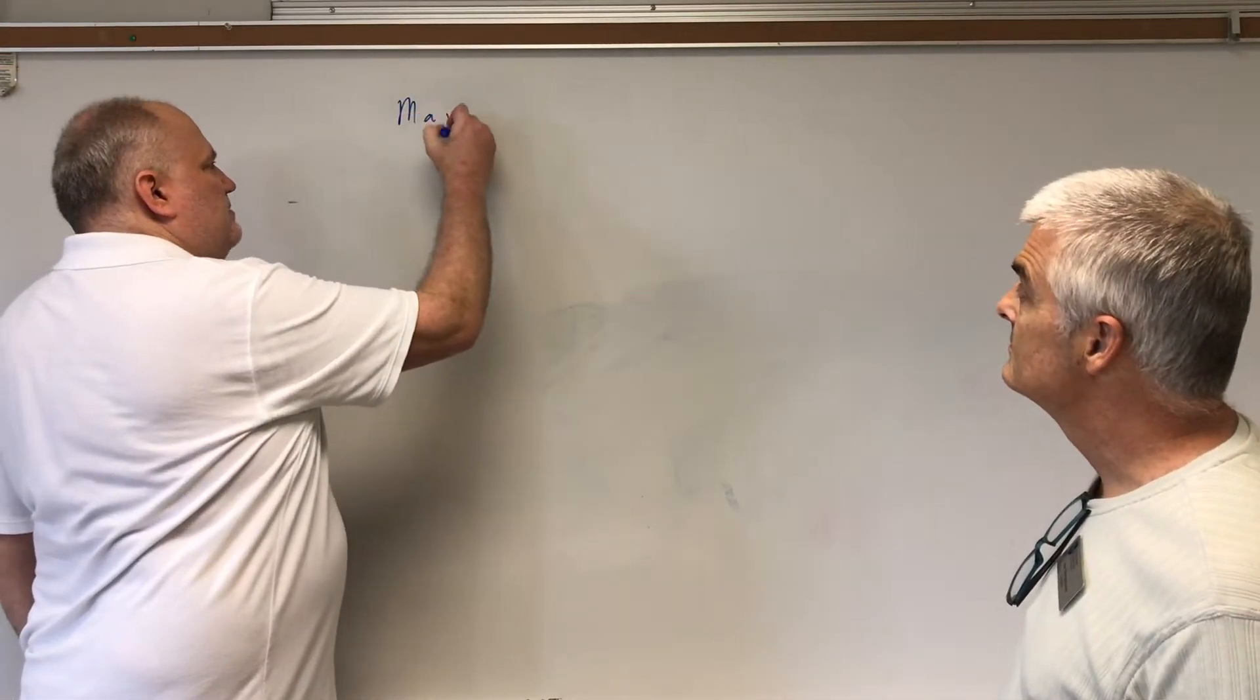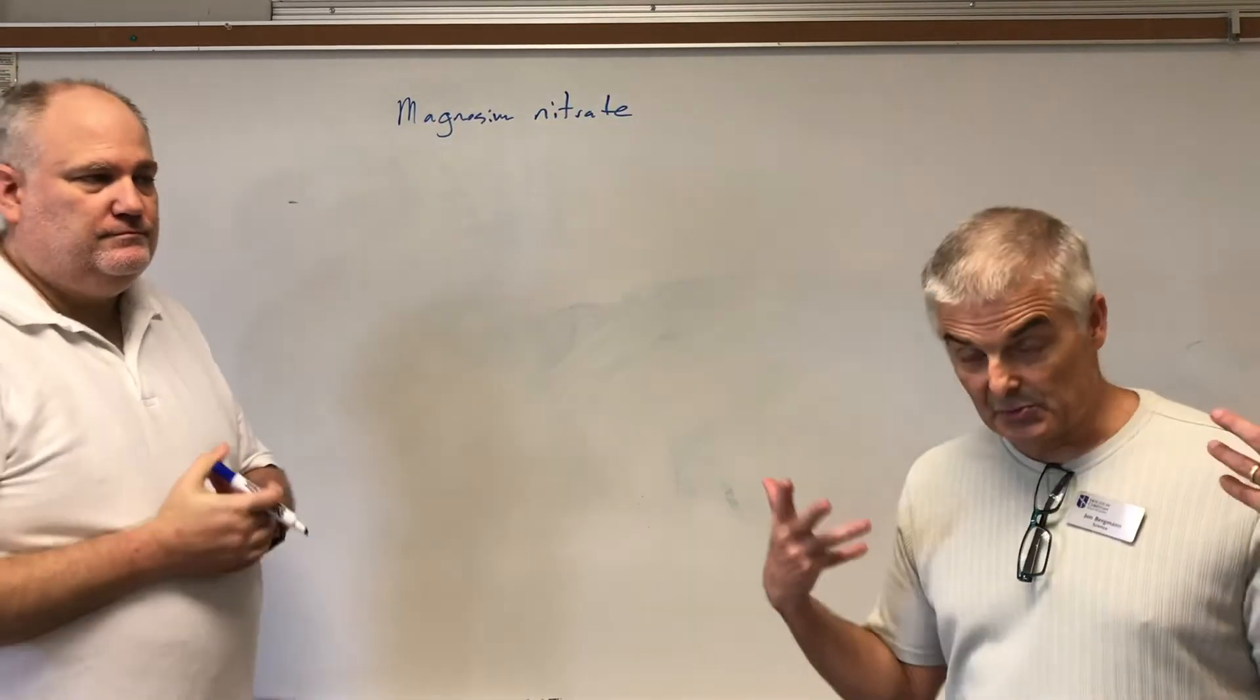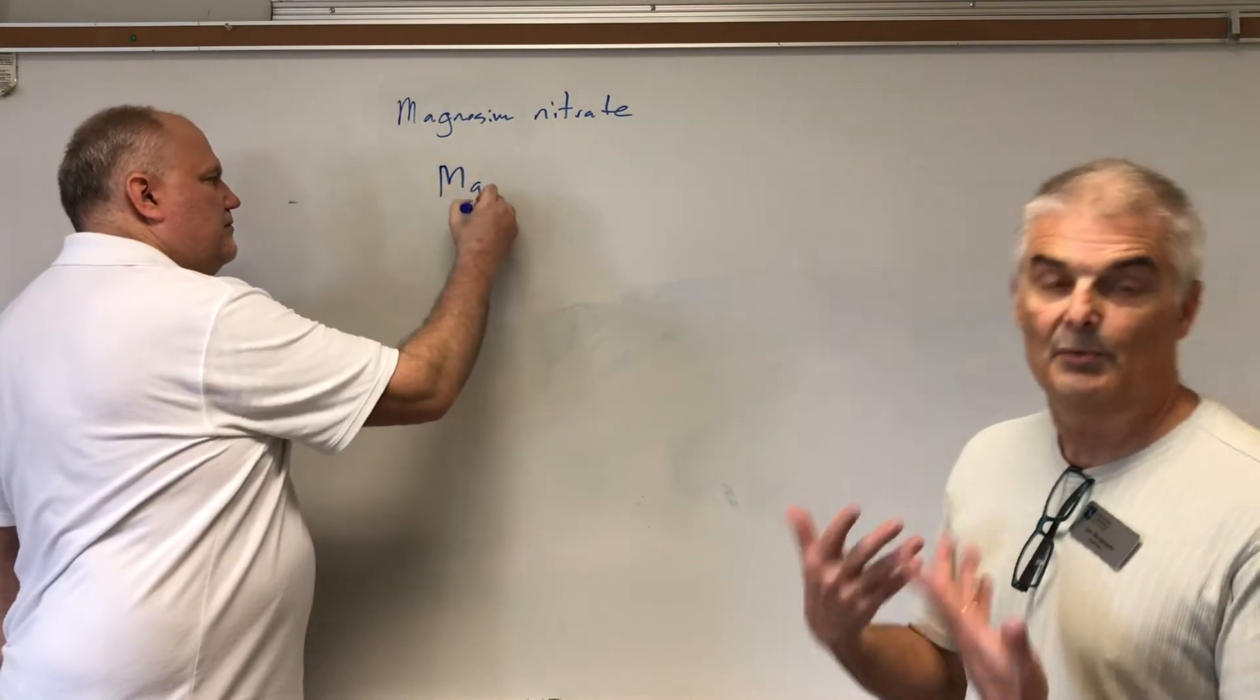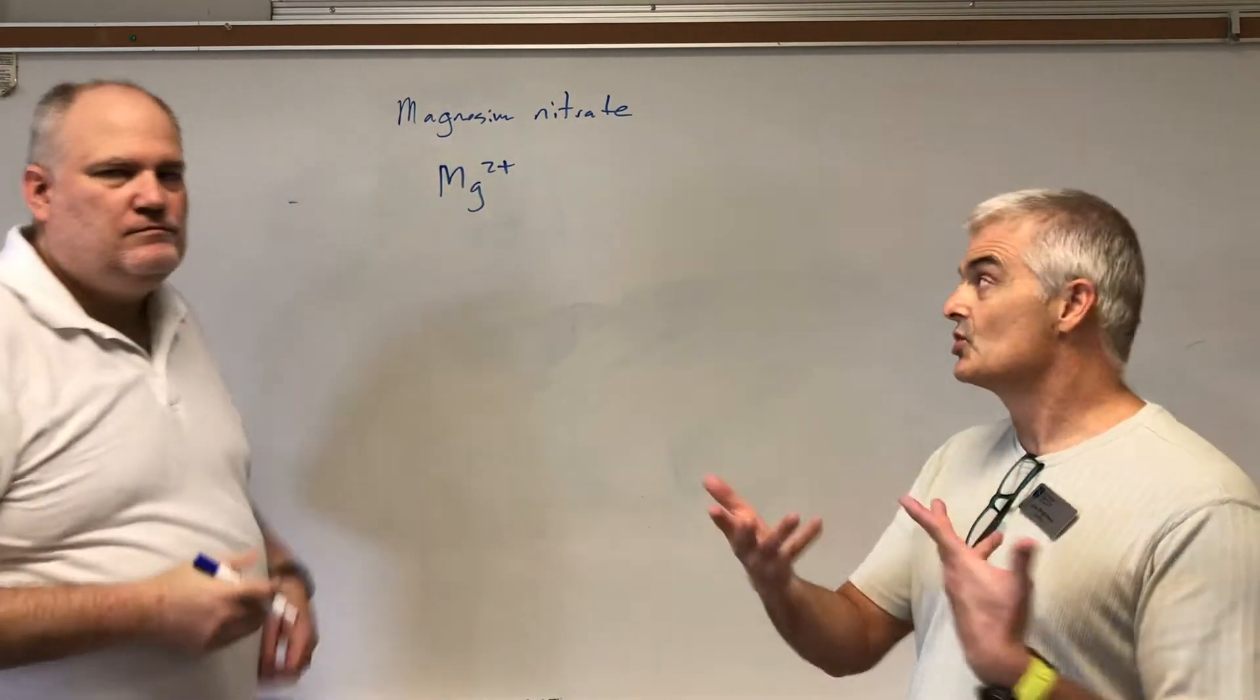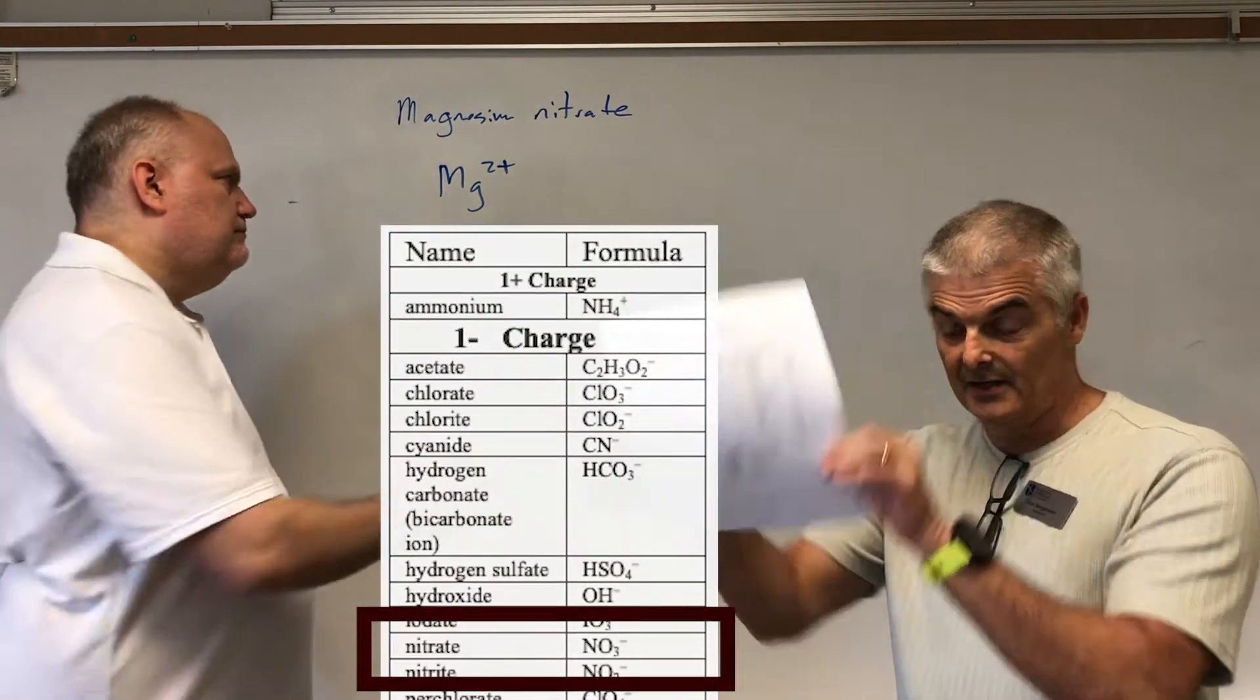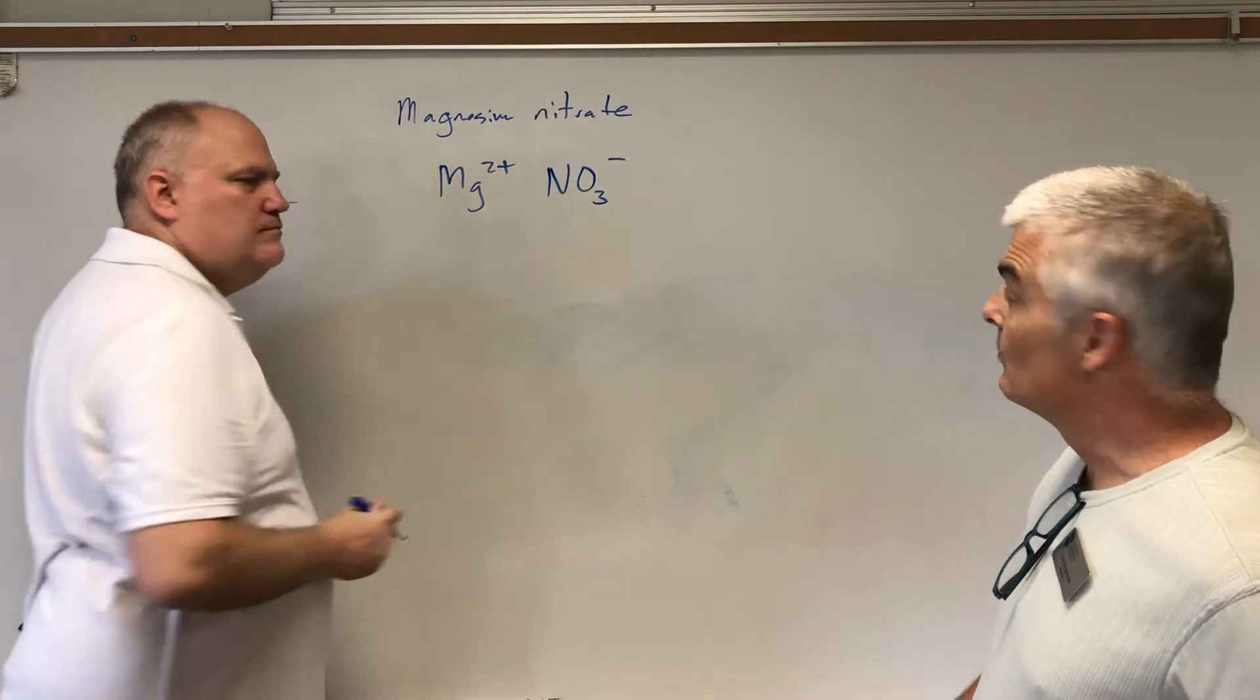So, let's try with this one. Magnesium nitrate. Alright, so, magnesium. We've done this before. Magnesium, second column, Mg, positive 2, right? You write the symbol with the charge. Got that? Now, nitrate. We grab our sheet right here. We look up nitrate and we write the formula NO3, negative 1.